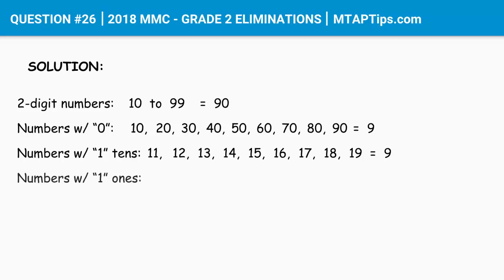Now, the numbers with 1 as ones place value. And again, we're supposed to start with 11, but we're not going to include that here anymore. So we're going to start from 21, 31, 41, 51, 61, 71, 81, and 91. And there are eight of them.